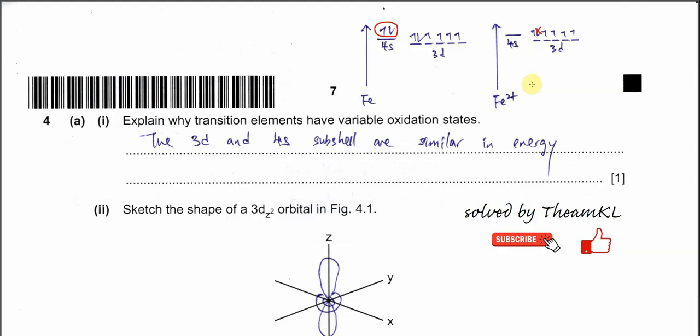Because the 4s and 3d energy levels are very close, it's easier for iron 2+ to release another electron from the d orbitals. After the electrons in the 4s sub-shell are released, it's easier to continue with the 3d because their energy levels are quite close. That's the meaning.